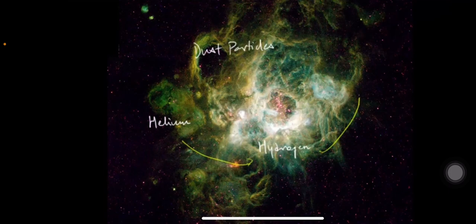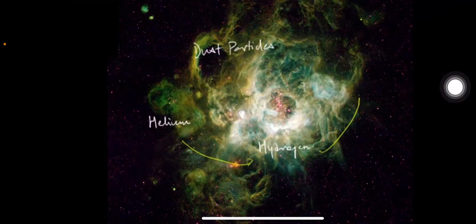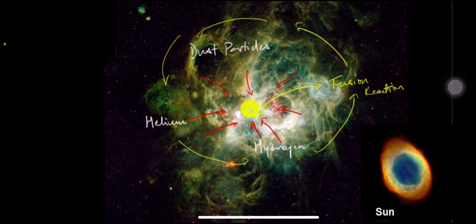The friction caused a fusion reaction. In this fusion reaction, hydrogen and helium fused together, releasing a huge amount of energy. This energy release is what formed the sun. So from the nebular cloud, through friction and fusion, the sun — which is a star — was formed first.